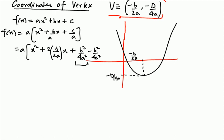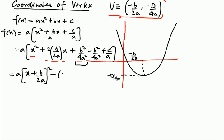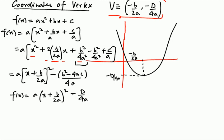This term will play the role of b² in the perfect square formula, and c/a remains as it is. We have x², the 2ab term, and b²/4a², so we can express this in perfect square form: (x + b/2a)². Multiplying 'a' with the remaining term — taking D = b² - 4ac divided by 4a — we get f(x) equals that perfect square term minus D/4a.